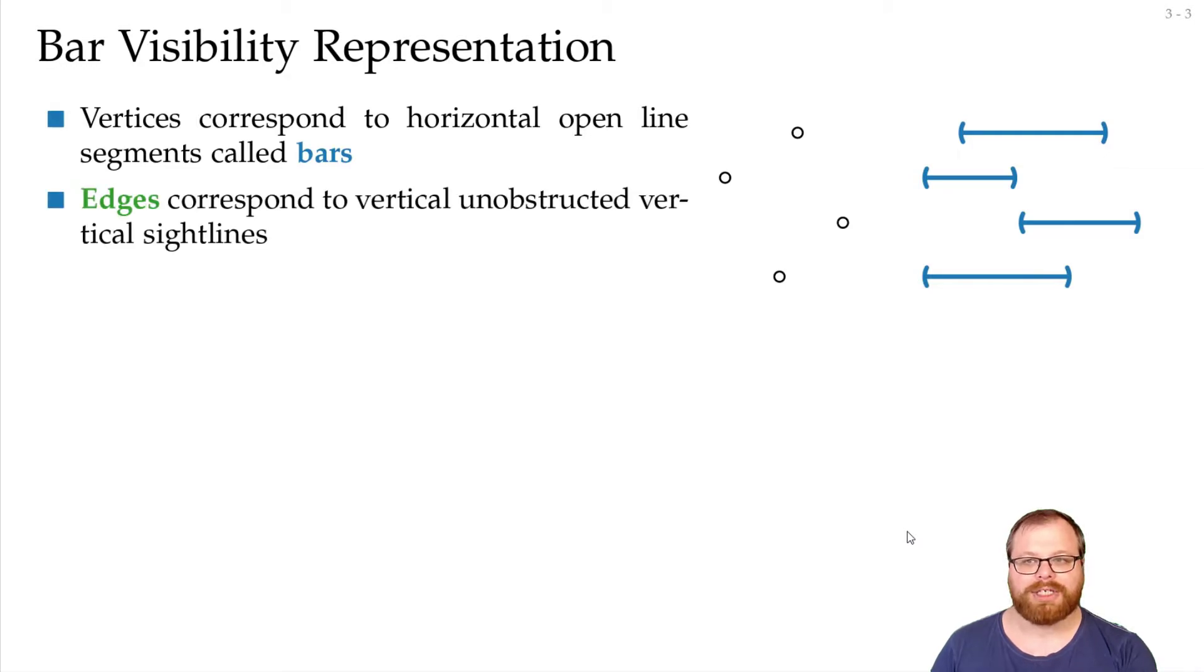And we have an edge between two vertices if there is some unobstructed vertical sightline. So these two bars see each other that means we have this edge. These two bars see each other which means we have this edge. And we have this edge and this edge.